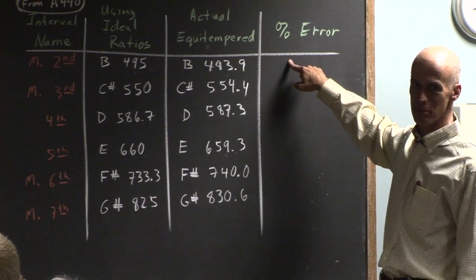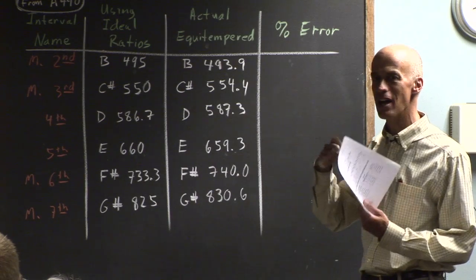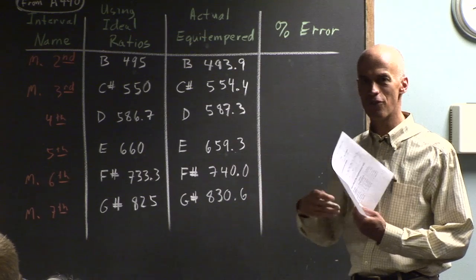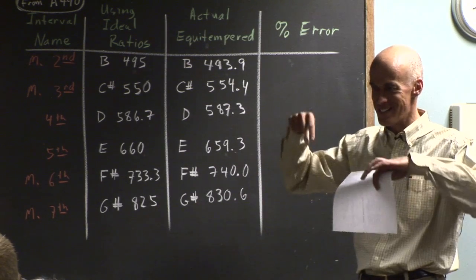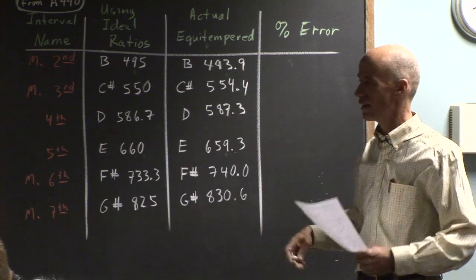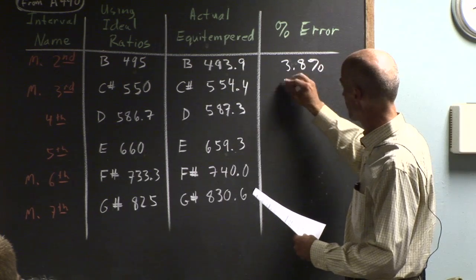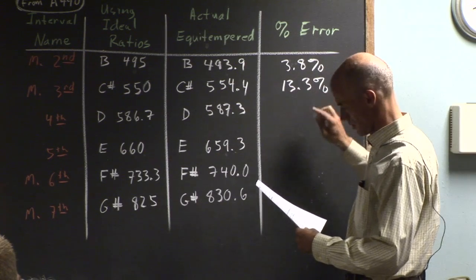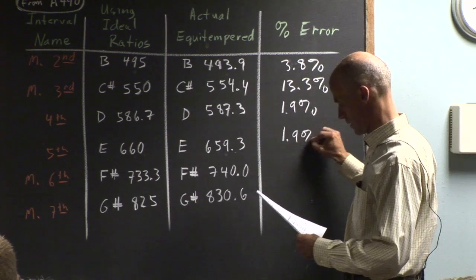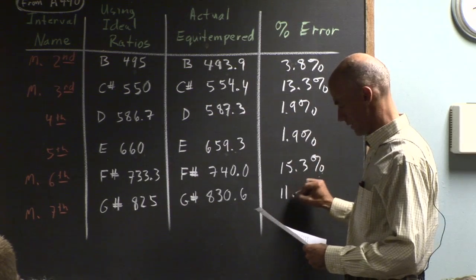So what ends up happening? Now we're going to talk about percent error. How far is it off? And when I write down the percent error, it's how far it is off in the direction of the next note. Does that make sense? So if it were 50% off, what would that mean? That means it would be exactly halfway in between two keys and the piano. That would be really weird, wouldn't it? So let's see what some of the percent errors are here. 3.8%, 13.3%, 1.9%, 1.9%, 15.3%, and 11.4%.